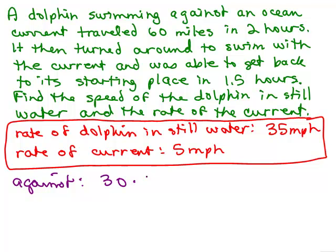you're going to have to subtract 5 so that the rate is really going to be 30, that it's really swimming, times the 2 hours and that means it should have gone 60 miles and that worked.